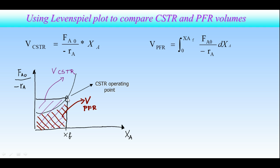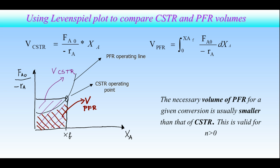This is the operating point of CSTR, and this is operating line of PFR. CSTR operates at the lowest rate, that means the necessary volume will be larger than for PFR.